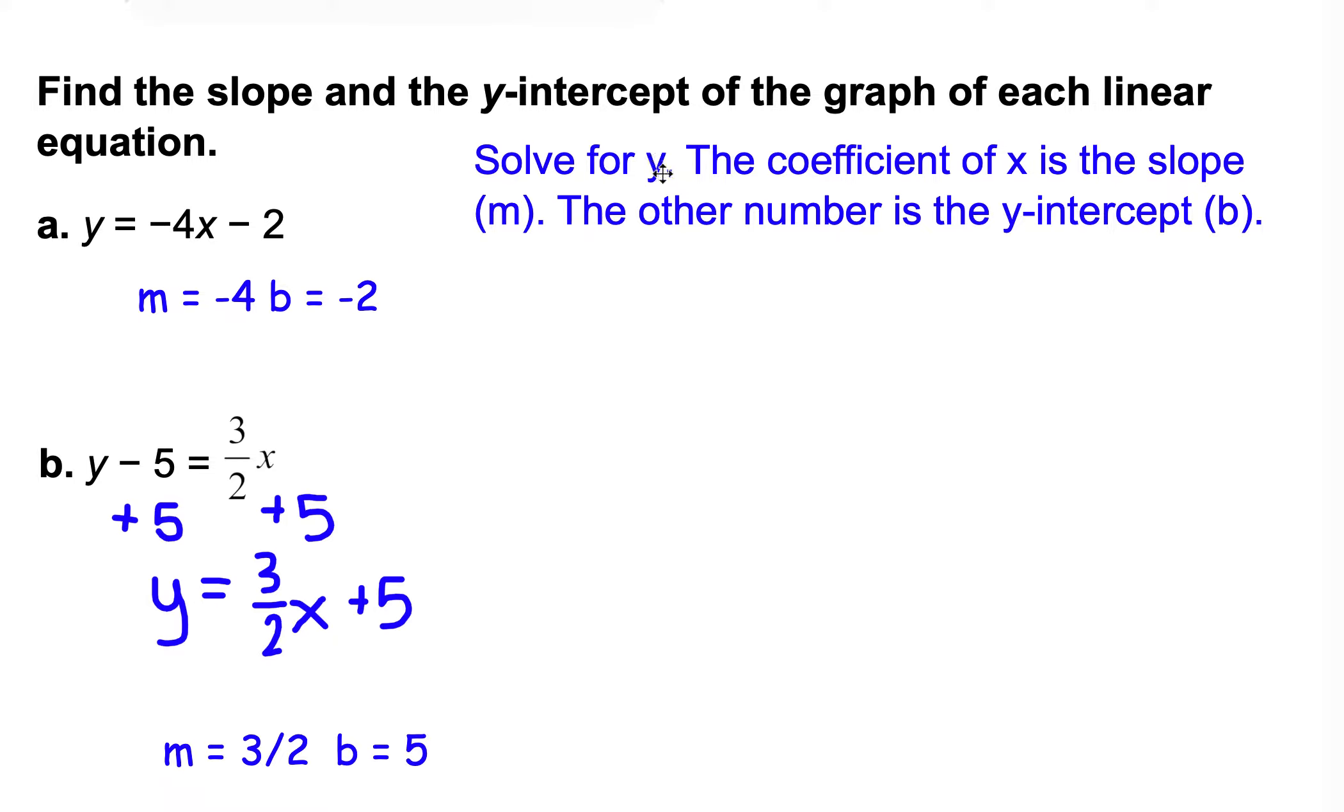Our plan is to solve for y. The coefficient of x is our slope, that's m. The other number is the y-intercept b. Looking at y equals negative 4x minus 2, that negative 4 is the coefficient of x, that's my slope. I need to include the sign in front of the next number. That's minus 2, so negative 2 is our y-intercept. No calculations, I just have to look at the equation.